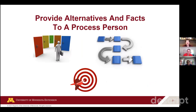When you're talking with a process person, provide the alternatives and facts, be precise, organize it in a logical manner, and include options with pros and cons — the process people like to think through pros and cons. Do not rush the process-oriented person. They spend a lot of time thinking through things before they come up with the final decision, and especially compared with an action person, they are a little bit slower.